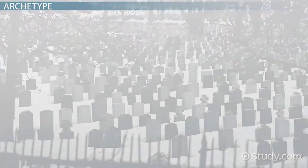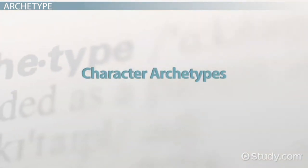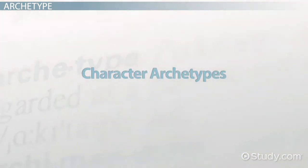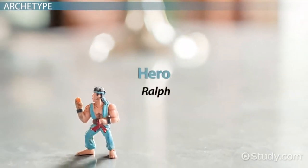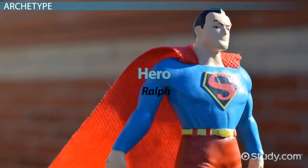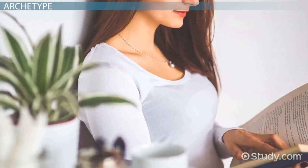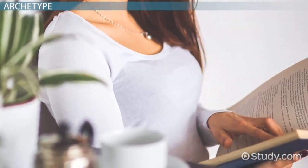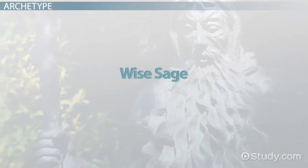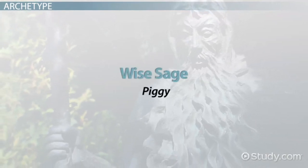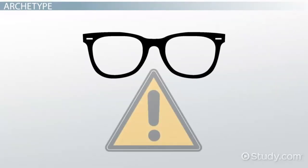The other type of archetype found in Lord of the Flies is character archetypes, of which there are two specific examples. The first is the hero archetype — Ralph is written as the archetypal hero. He is brave and charismatic, which makes him elected early on as the leader, and readers will naturally cheer him on. The second character type is the wise sage — Piggy is depicted as the archetypal wise character. He is intelligent yet vulnerable, wears glasses, and is cautionary.